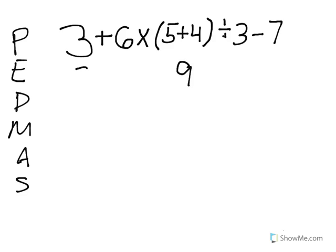So now our problem is 3 plus 6 times 9 divided by 3 minus 7. We don't have any exponents. So the next thing we're going to do is we're either going to divide or multiply going from left to right.